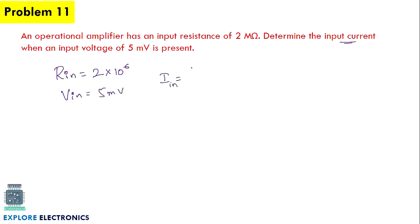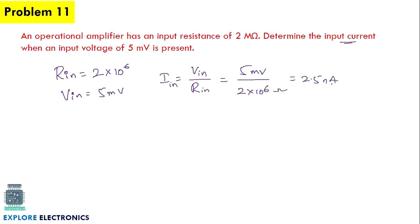The input current is Vin divided by Rin: 5 millivolts divided by 2×10⁶ gives 2.5×10⁻⁹ amperes, which is 2.5 nanoamperes. The exponent minus 9 corresponds to the nano prefix.